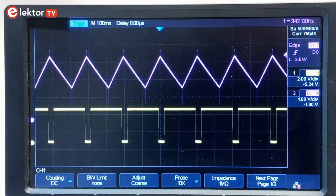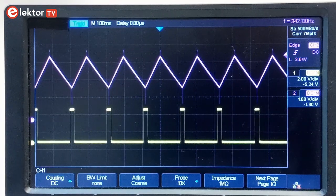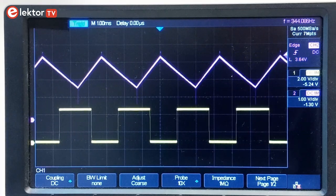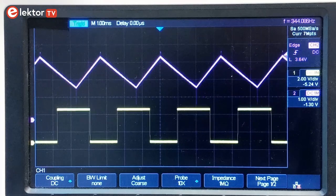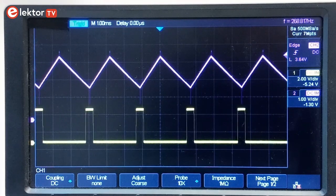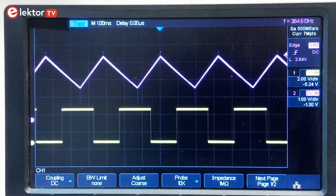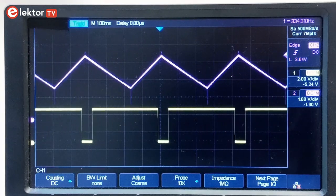With the given component values, the duty cycle can be adjusted from about 10% up to 90%. By tweaking R6 and R7 you can modify the range. Ideally, they would have identical values, but as a triangle wave is not perfectly centered around half the supply voltage, they are slightly different.